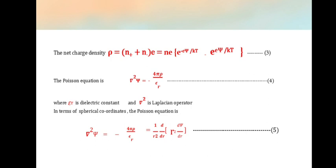Poisson equation is ∇²ψ = 4πρ/εR, where εR is the dielectric constant. Del square is a Laplacian operator.